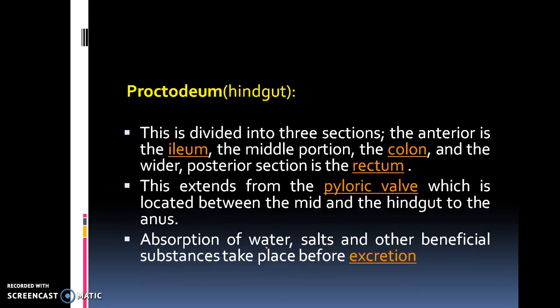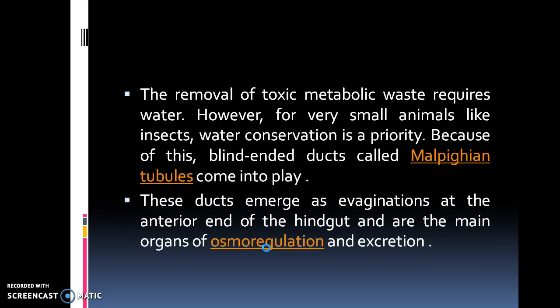Microscopic projections from the midgut wall called microvilli increase surface area and allow for maximum absorption of nutrients. The last part of the alimentary canal is the proctodeum, or hindgut. This is divided into three sections: the anterior is the ileum, the middle one is the colon, and the posterior one is the rectum. This extends from the pyloric valve, located between the midgut and the hindgut, to the anus. Absorption of water, salts and other beneficial substances takes place here before excretion.